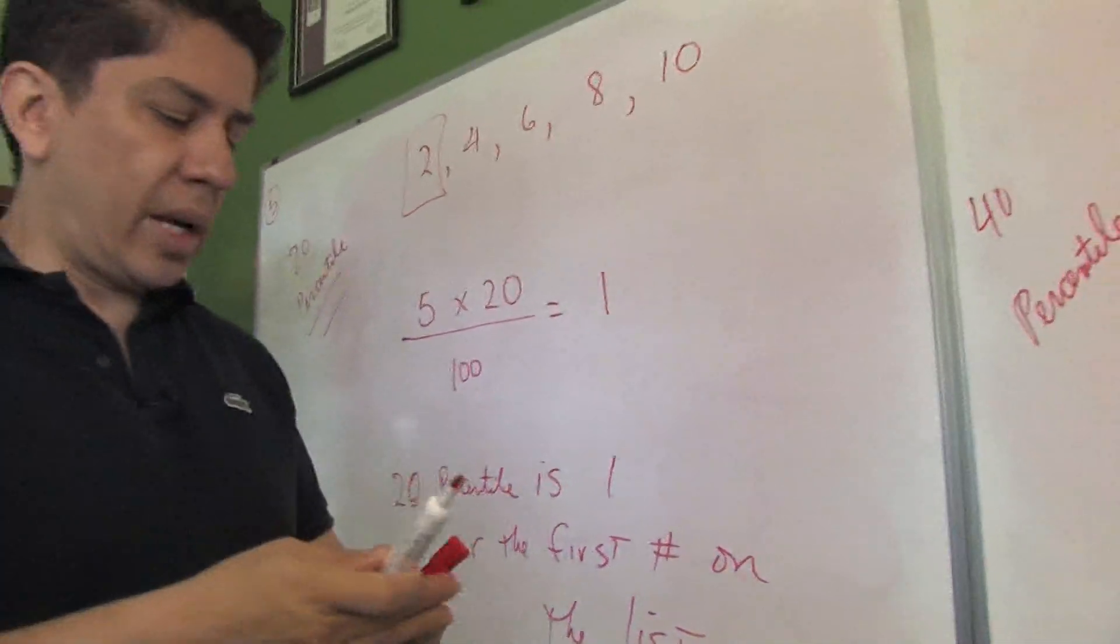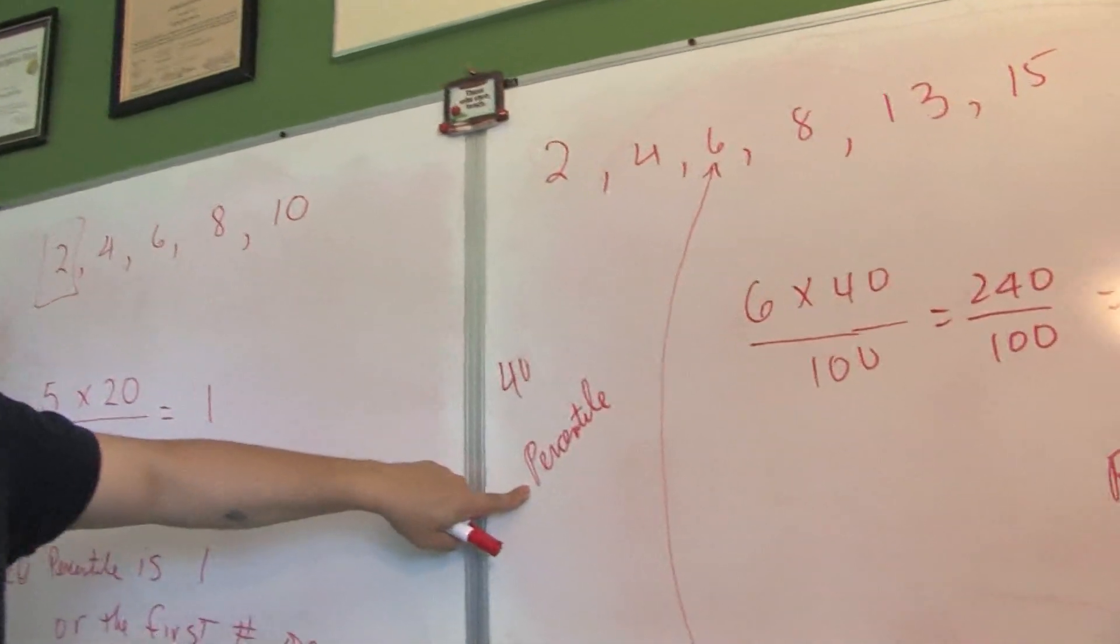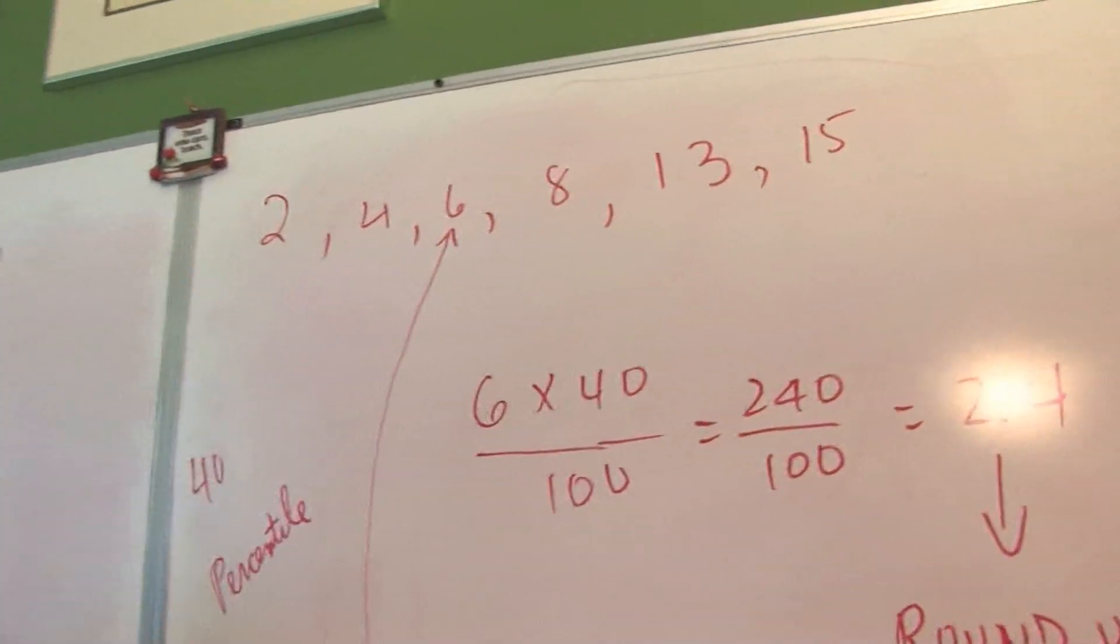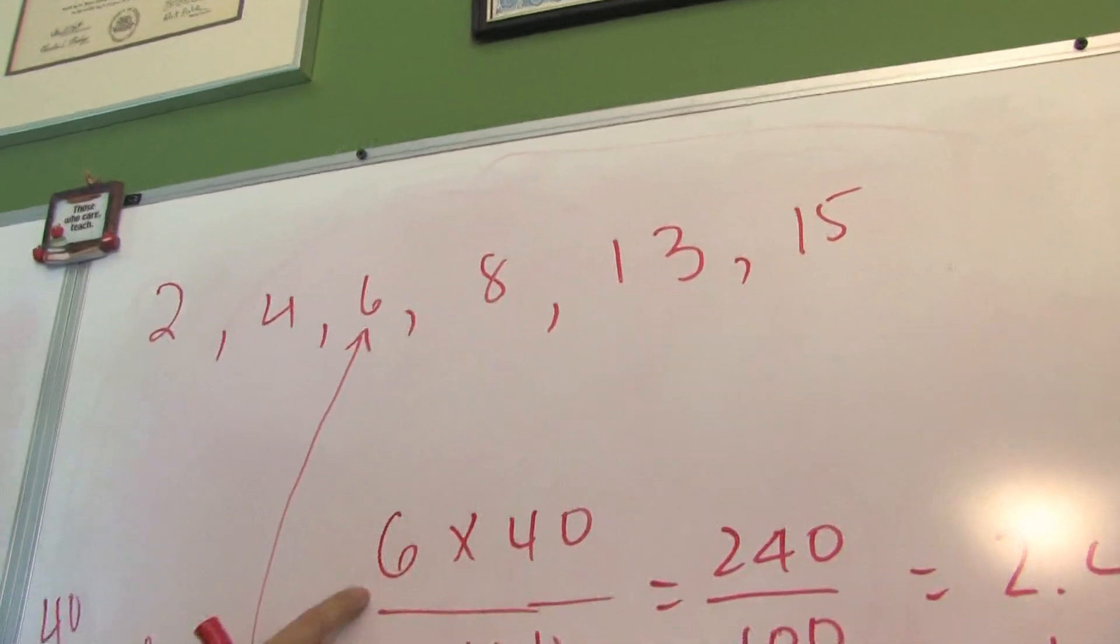Now another example. You want to calculate the 40th percentile of these numbers. Again, count how many numbers you have: 1, 2, 3, 4, 5, and 6. That's where that 6 comes from.